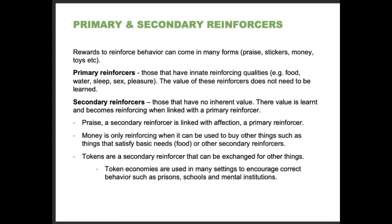When using reinforcement, there are primary and secondary reinforcers. Primary reinforcers have innate reinforcing qualities — food, water, sleep, sex, and pleasure. Their value does not need to be learned. Secondary reinforcers have no inherent value; their value is learned and becomes reinforcing when linked with a primary reinforcer. Praise, a secondary reinforcer, is linked with affection, a primary reinforcer. Money is only reinforcing when it can be used to buy things that satisfy basic needs. Tokens are a secondary reinforcer that can be exchanged for other things, and token economies are commonly used in prisons, schools, and mental institutions to encourage correct behaviors.